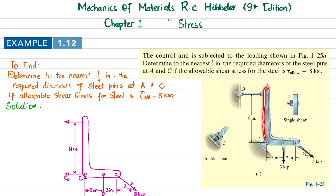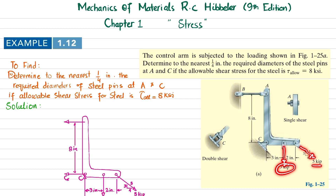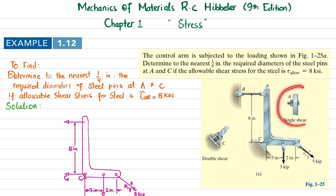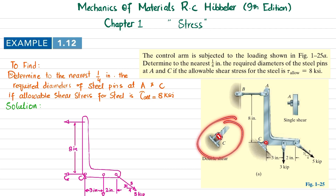You can see this is the control arm where the loading at this point is 5 kips, and at this point there is a 3 kips load, and this is a pin support at point C. The top view is given here while this rod is connected with this arm through pin A, and its side view shows that this pin is in single shear. At point C, the top view shows that this pin will have double shear, as mentioned.